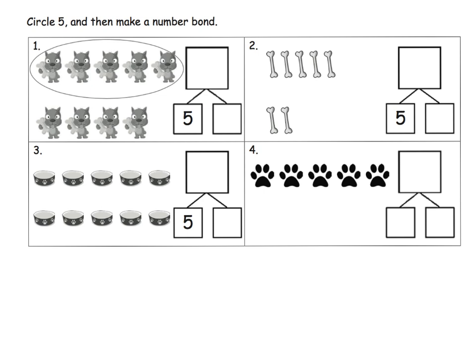So, let's take a look at these with some actual number problems in the Eureka Math curriculum. So, here, the directions say to circle a five and then make your number bond. So, we can see we've got a whole bunch of these little creatures. I guess these are dogs because those are bones. So, one, two, three, four, five. So, there is our circled five.